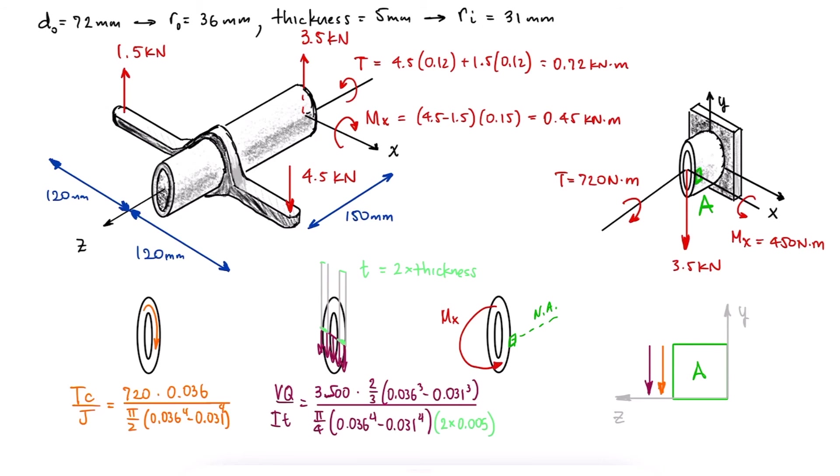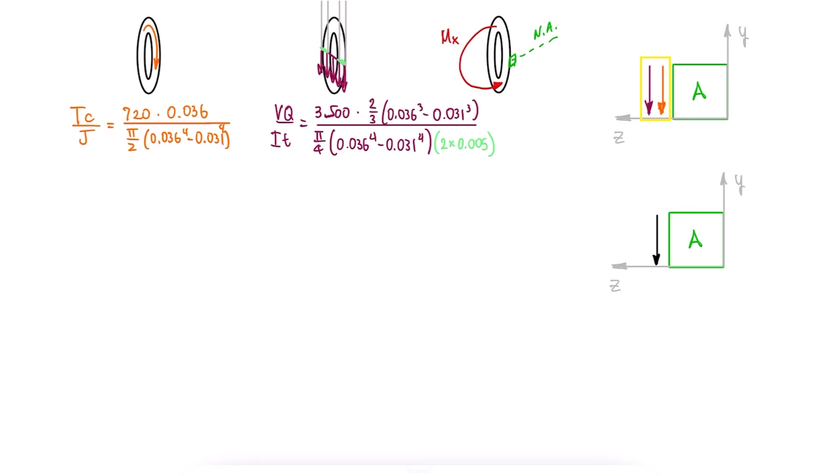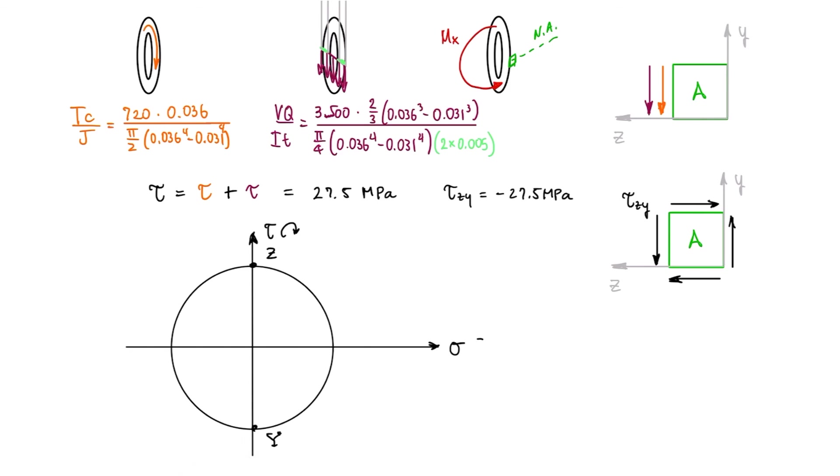The total shearing stress is therefore the sum of the torsional and the transverse shear stress. We call the stress tau zy, and with the help of a Mohr circle, we see that the principal stresses are 27.5, 0, and minus 27.5.